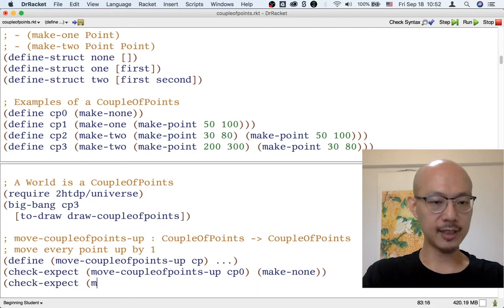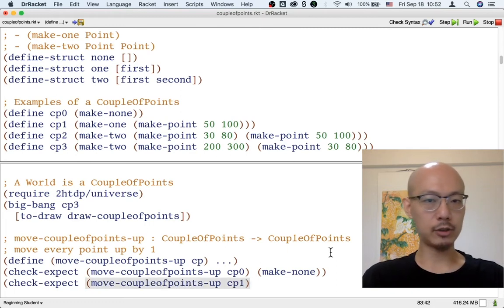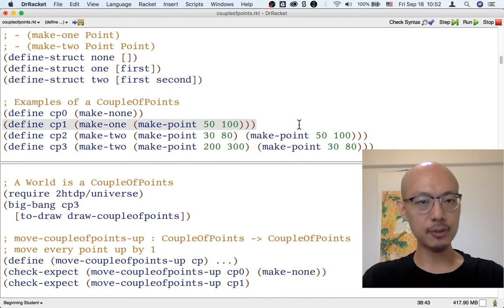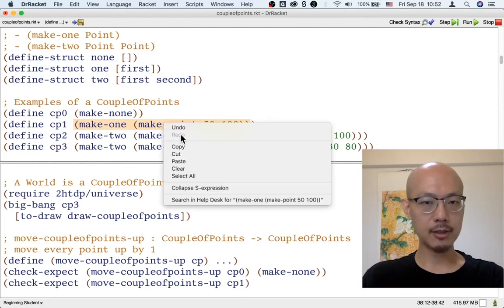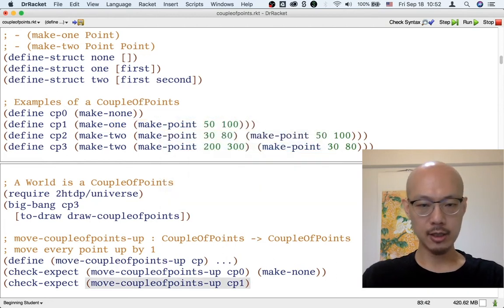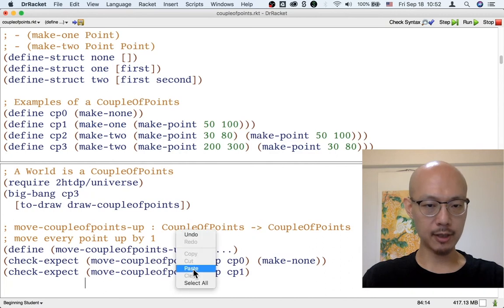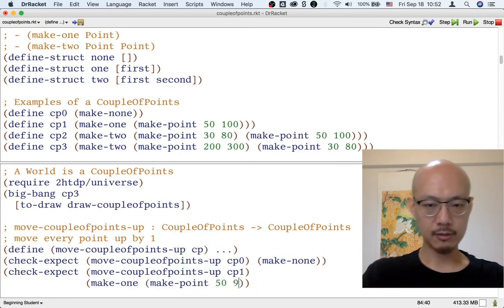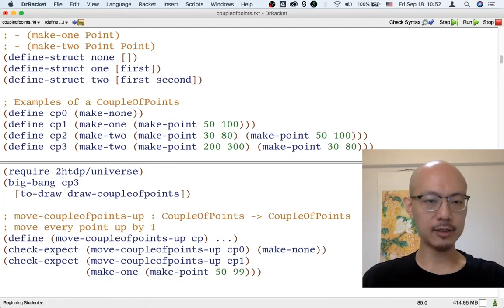Let's move on to the second kind of couple points, which is illustrated by cp1. Suppose this is the initial couple points. To move up, we have to change 100 to 99. So I'm going to copy this and in the expected output have something that's got y reduced by one. That's our second example.